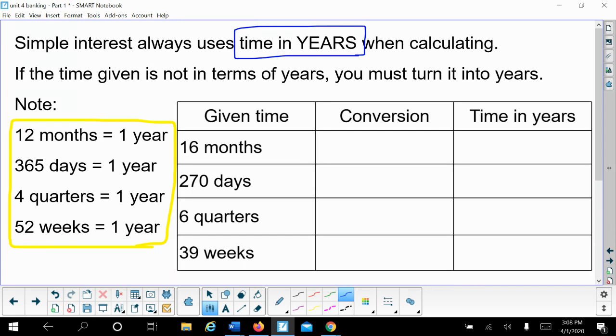Let's look at a couple of examples. If we are given time in terms of 16 months, what would that look like for years? I'm going to use the fact that 12 months is equal to one year. So for my calculations I'm going to do my total amount of time, 16 that I'm given, and I'm going to divide it by the 12 months in a year.